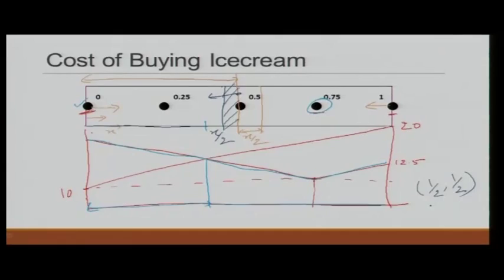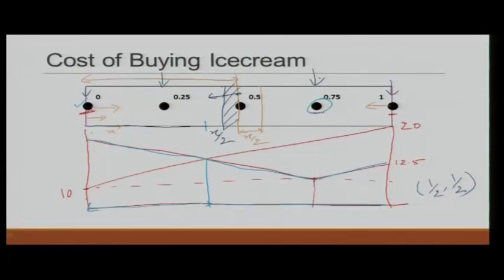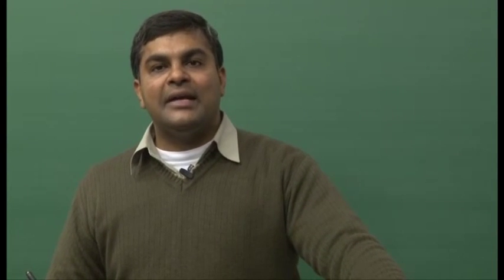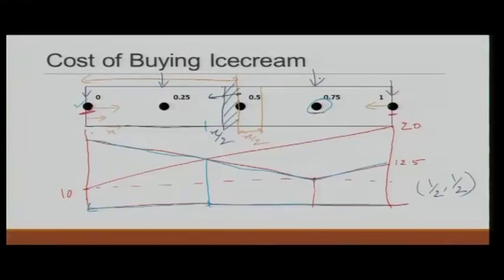But is this socially optimal? People at either end have to walk 500 meters, and walking has a cost. What if vendors parked at 0.25 and 0.75? They would still capture half the market each, but no consumer would have to walk more than 250 meters — so that placement is socially better. Unfortunately, it is not a Nash equilibrium, because self-interest triumphs over social good, just as we see in the prisoner's dilemma. Neither vendor has incentive to park at 0.25 or 0.75.